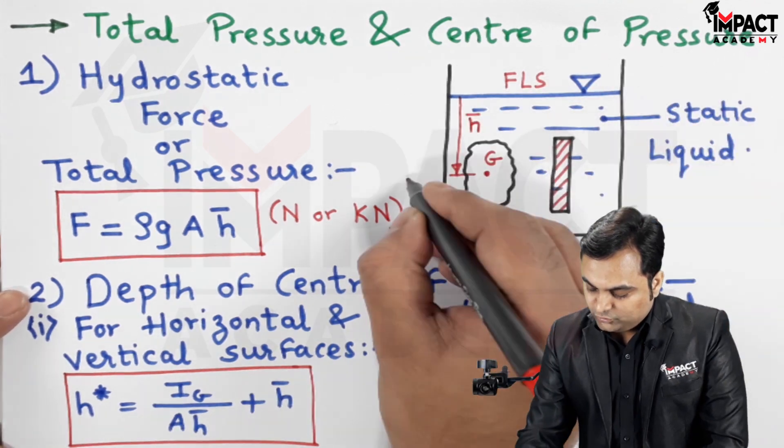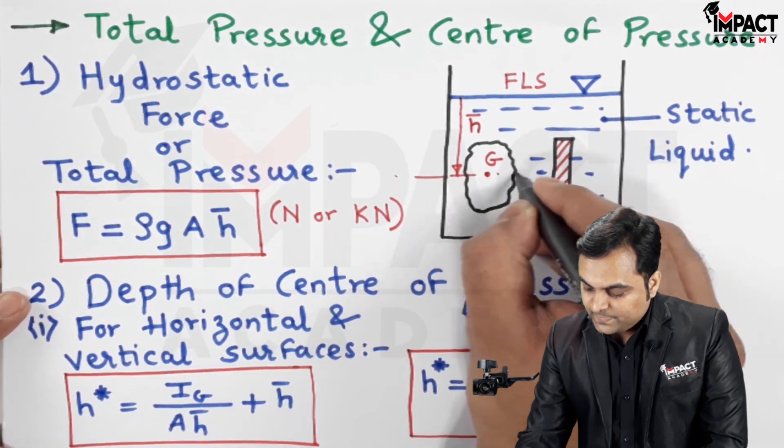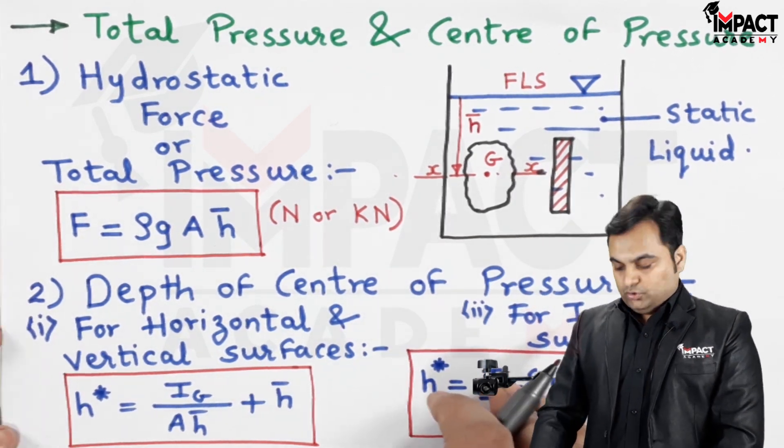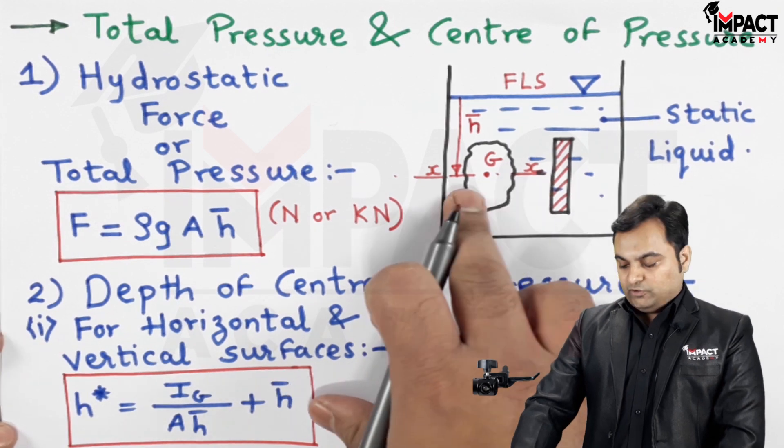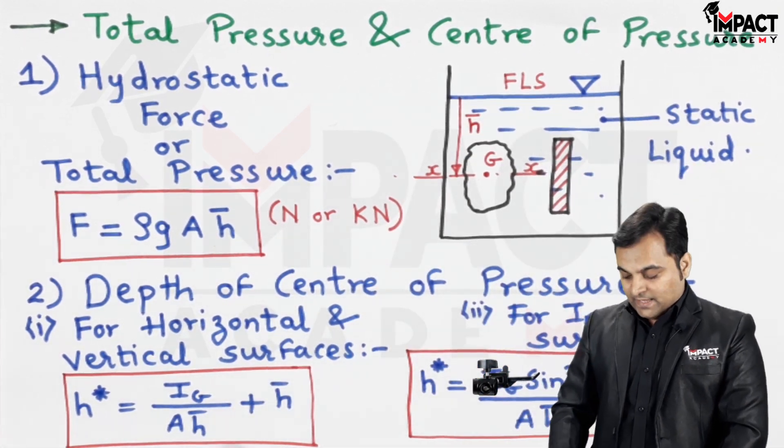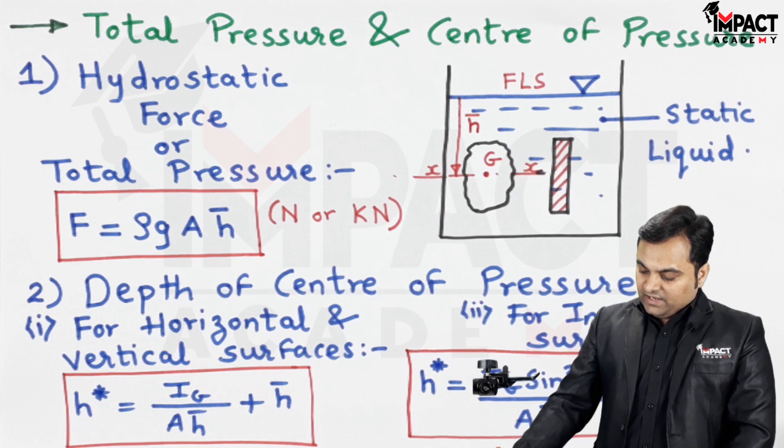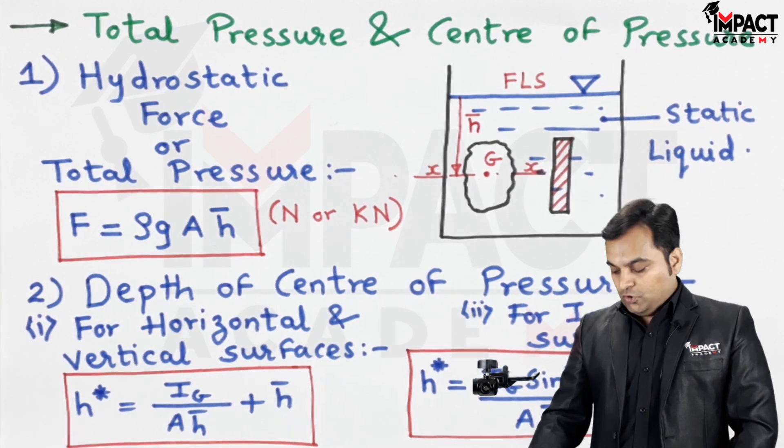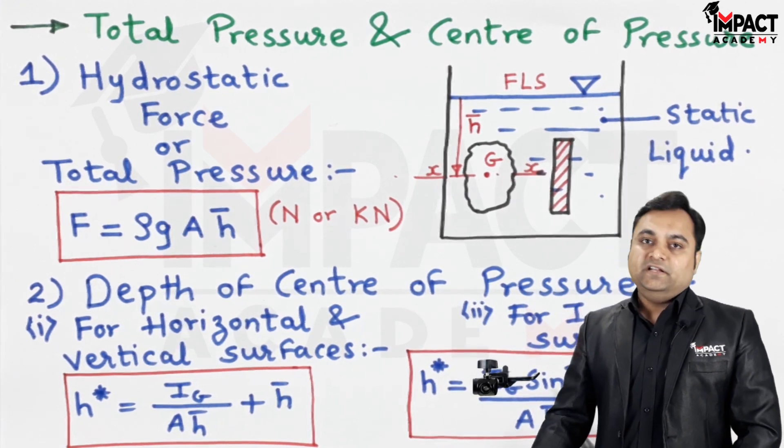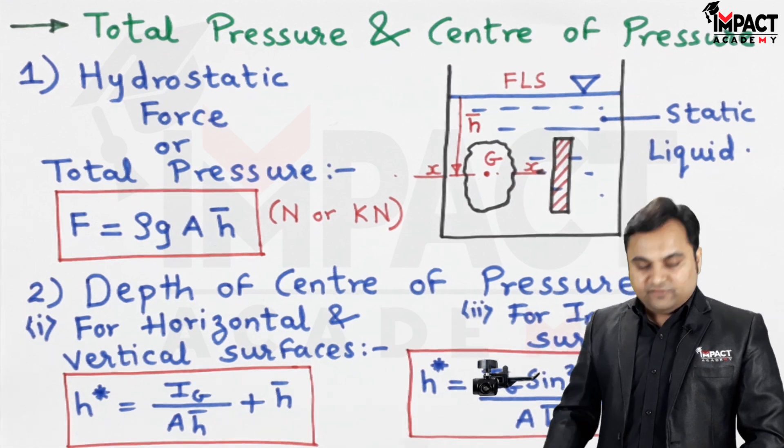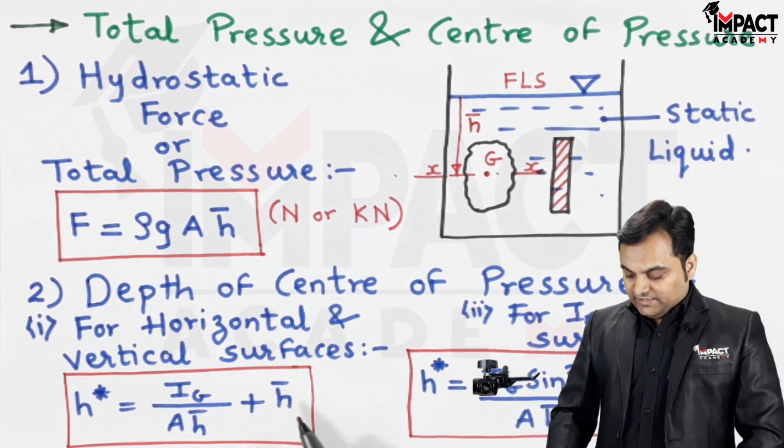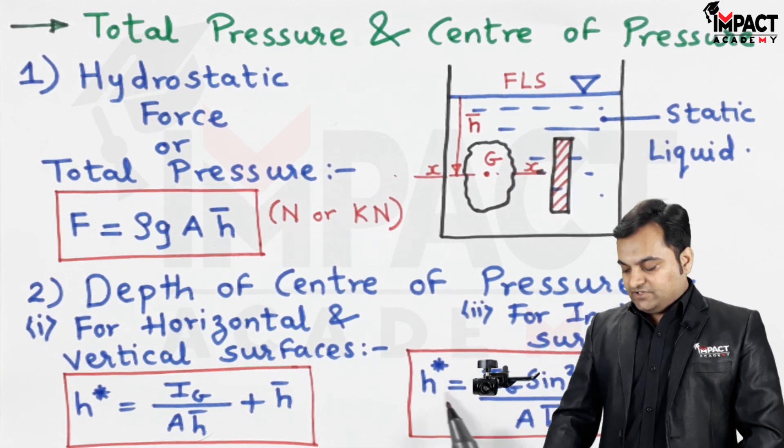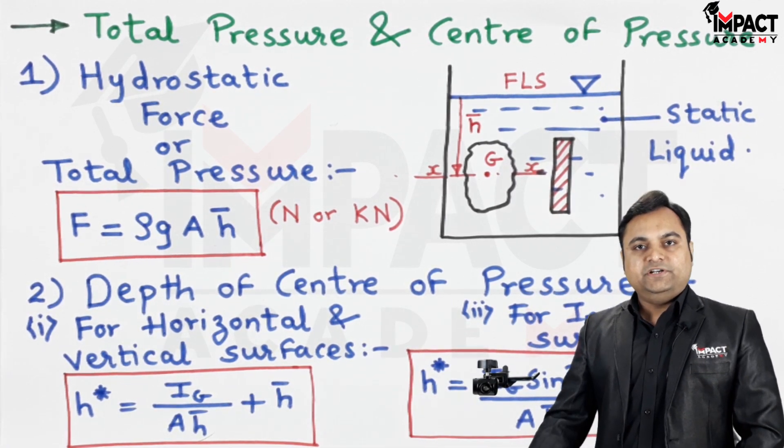We have to calculate ig about an axis which is parallel to the free liquid surface. Then after that for inclined surfaces the formula is ig sin square theta upon a h bar plus h bar where theta will indicate the inclination of the plate. As we see from both the formulas, h star value will always be greater than h bar value.